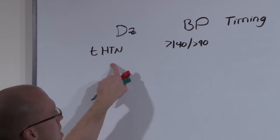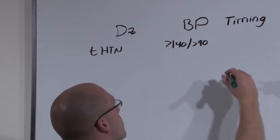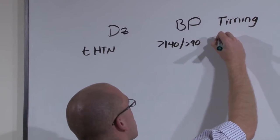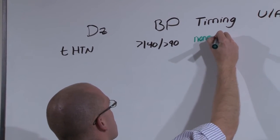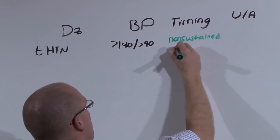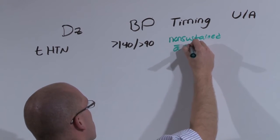Because it is a medical disease, the timing is going to be a non-sustained elevation of blood pressure, non-sustained because it's transient, that occurs before 20 weeks gestation.